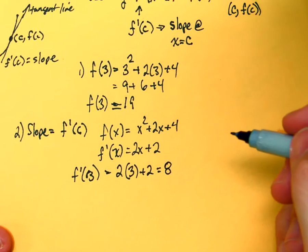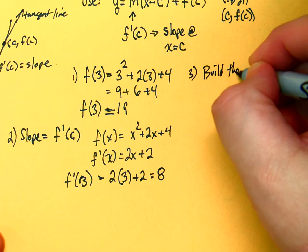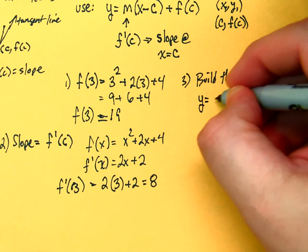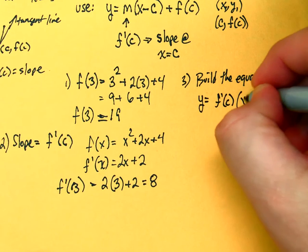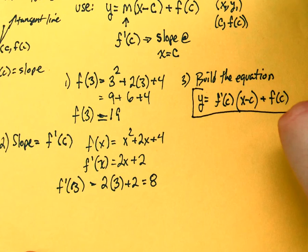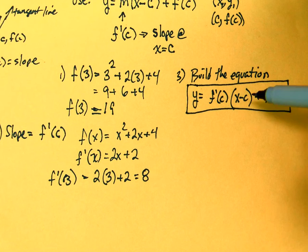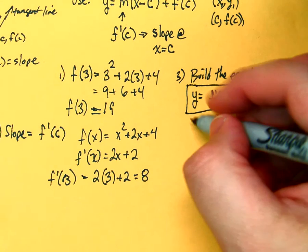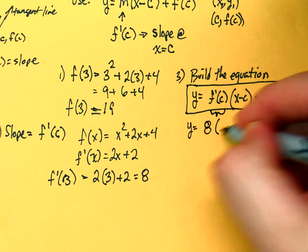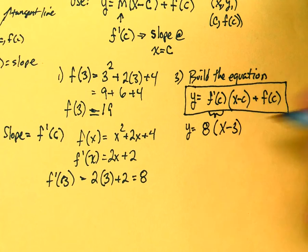So, that was step 2. Step 3. Build the equation. Now, this is the equation that you're going to want to remember. But, think of it as slope times the x minus the x value plus the y value of the point. So, what's my slope? My slope is 8. X minus, what's my c value? What's the x value in this? 3. That's the value we're using. And then it was what? Plus 19?